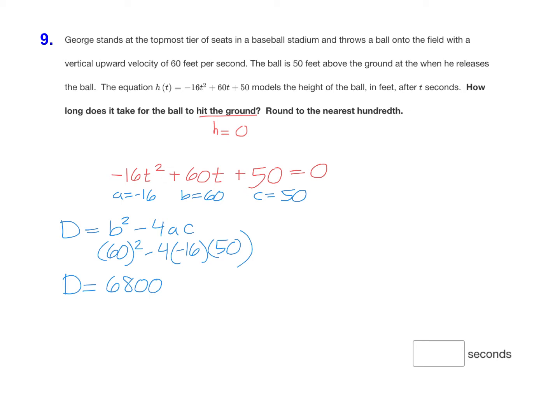Now that we know the discriminant, we're ready to find the answer using the quadratic formula. The quadratic formula is x = (-b ± √D) / 2a. Here, the b is 60. So for negative b, we need -60 ± √6800 all over 2 times a, and the a value is -16. Before you put that in your calculator, you're going to want to figure out what 2 times -16 is. That's -32.